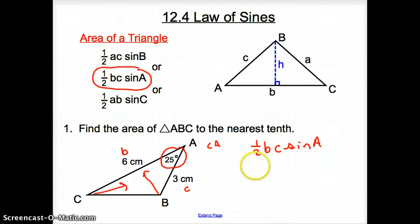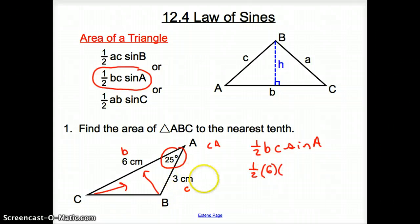So, let's go ahead and plug things in. Then, we have one-half times our B, which is a 6, and then C, which is a 3. And then we have sine of our angle, which is 25. Now, just go ahead and punch this all into your calculator. Make sure your calculator is in degrees for this sine. And we come up with 3.8.